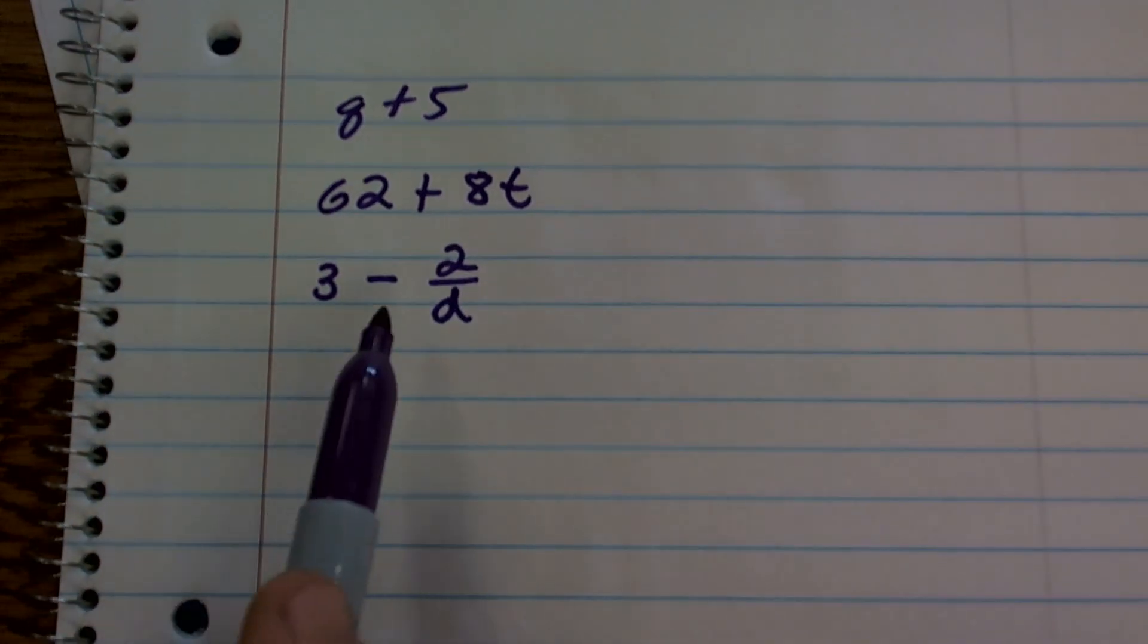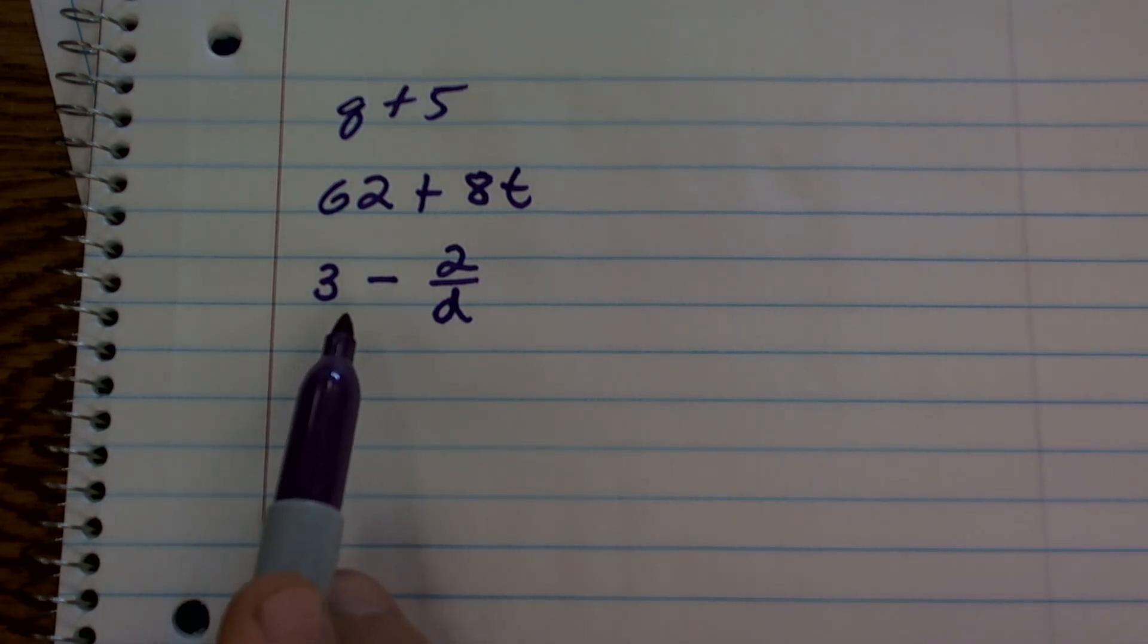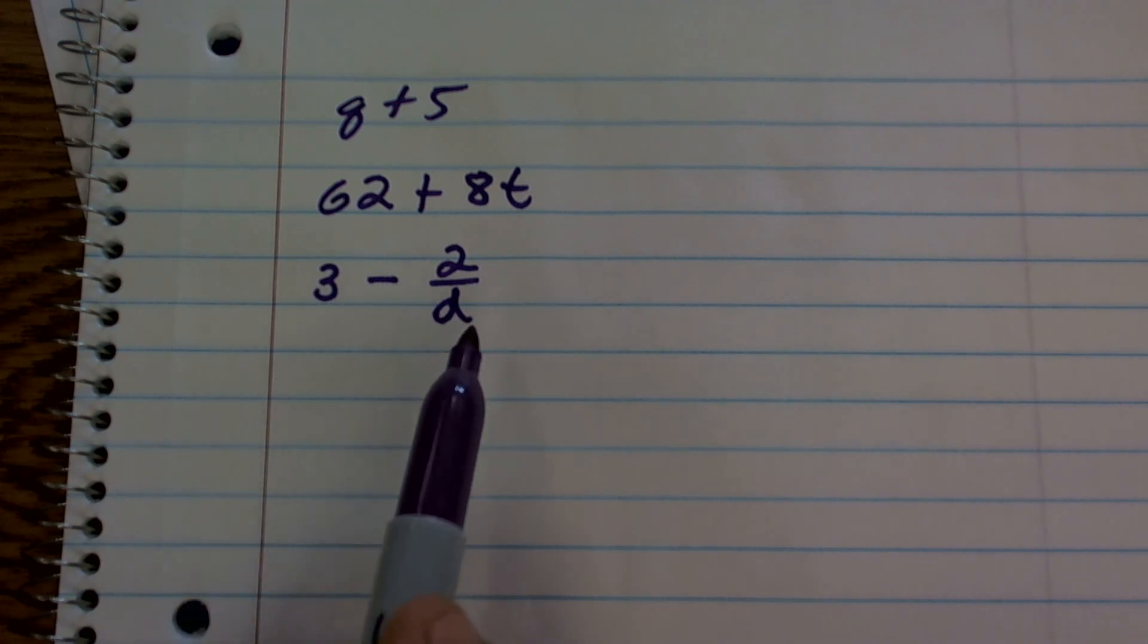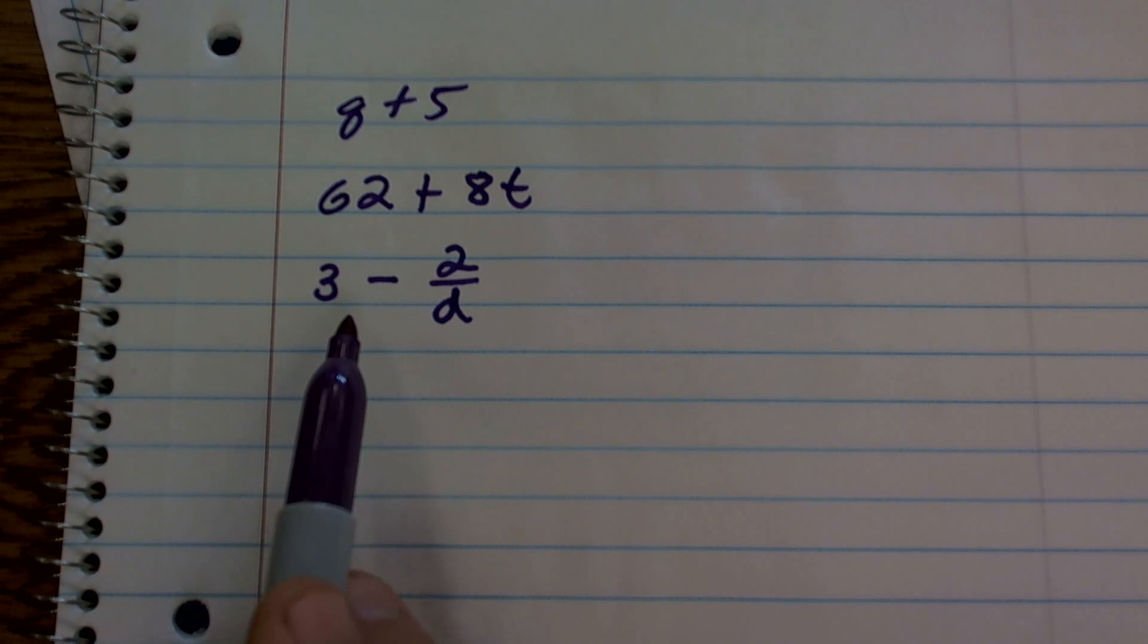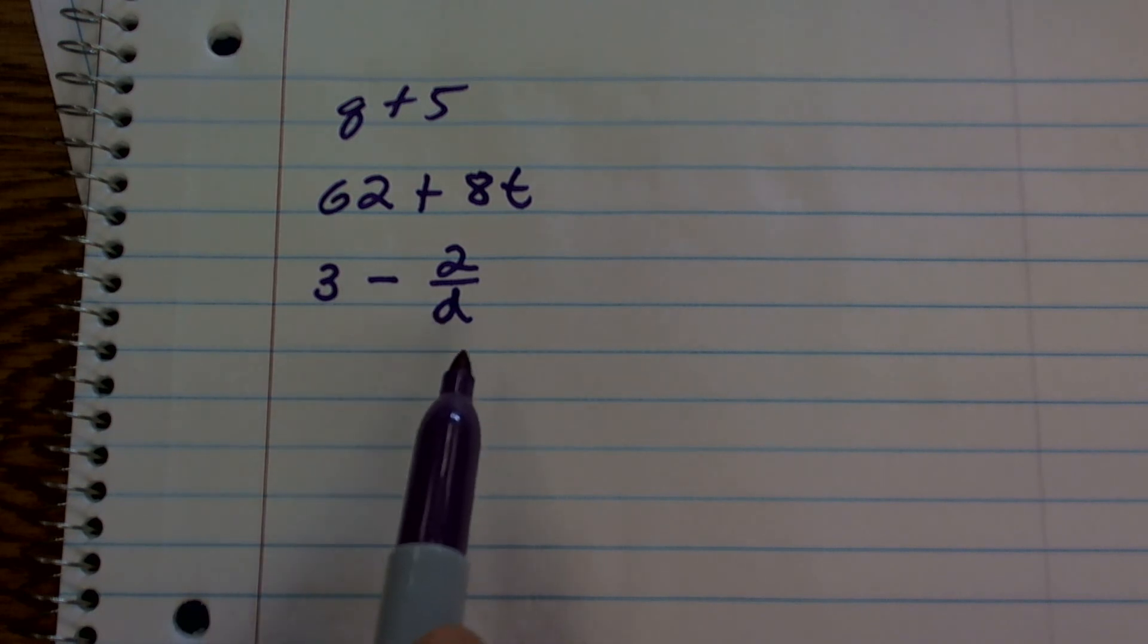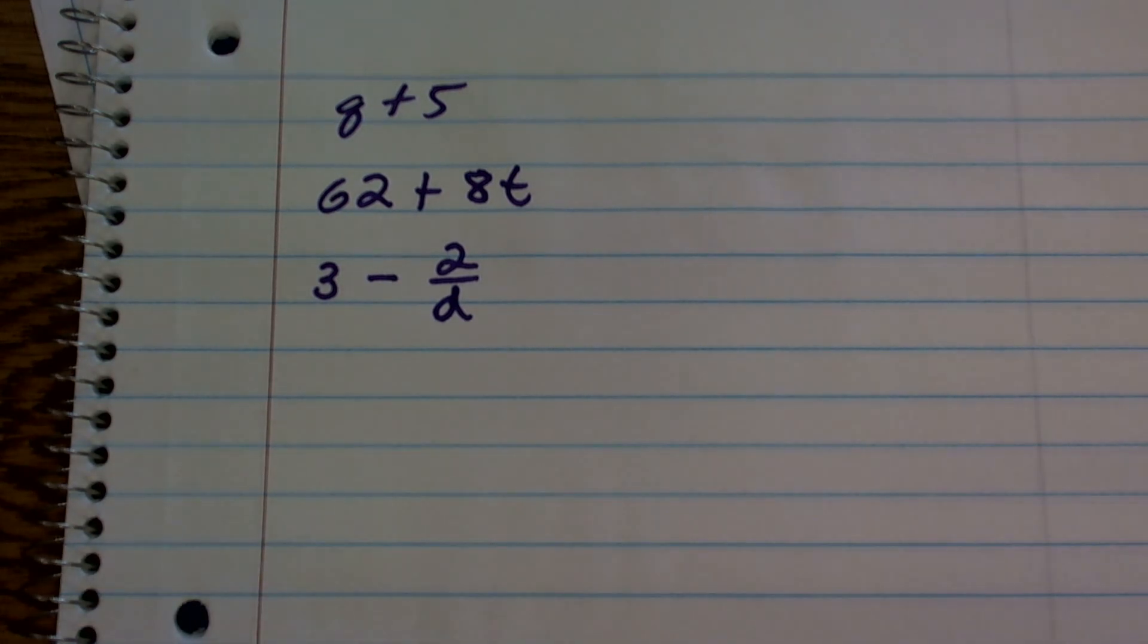Here we're using subtraction. I could say 'the difference of 3 and the quotient 2 divided by D.' You could say '3 minus 2 divided by D,' or '3 less than 2 divided by D.' So there's a lot of different ways you can work on this.